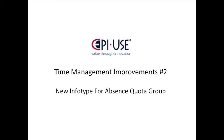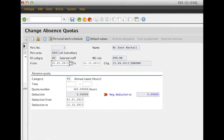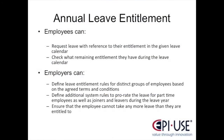Before we look at the improvement, let's look into the configuration around absence quotas. Absence quotas are used as a basis to represent an employee's entitlement to specific types of leave. The most common of these is annual leave, and I'll focus on this type of leave to illustrate the benefits of this new improvement. Creating an entitlement to annual leave allows the employee to request their leave with reference to entitlement in a given leave calendar, and to check what remaining entitlement they have during that leave calendar, notably through ESS.